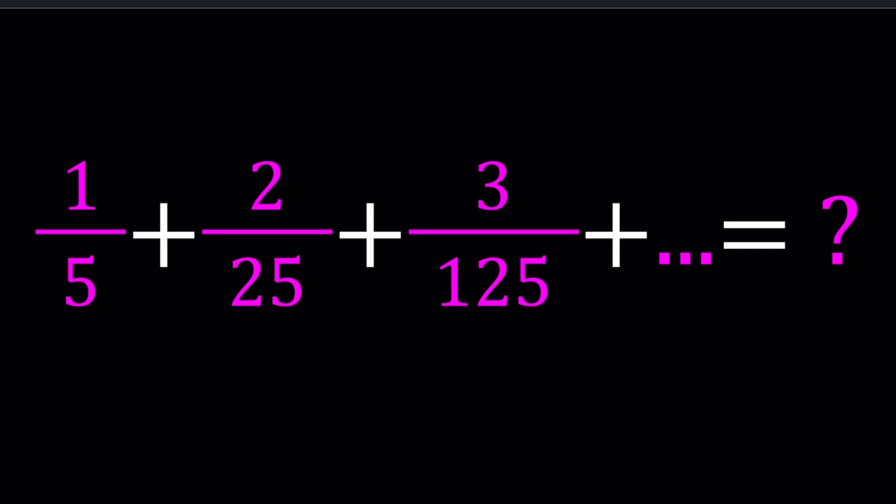The numerators are consecutive positive integers, and the denominators are powers of 5. In other words, you have a sum like n divided by 5 to the power n, as n runs 1 through infinity. That's the sum we're basically looking at.